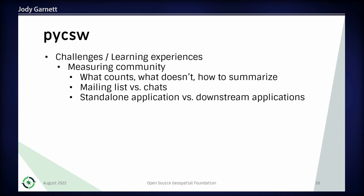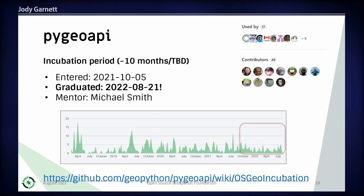One challenge we had was with community and communication. Back then, the single measure was the mailing list, but we found a lot of communications were happening on IRC and other means. Another issue was standalone application versus downstream usage — a lot of communications were happening in the downstream application community rather than our core ones. We really had to articulate what that meant when we applied for graduation.